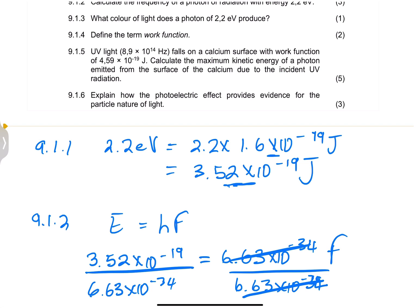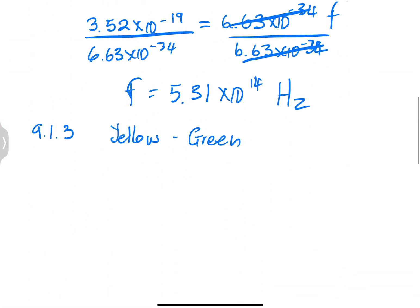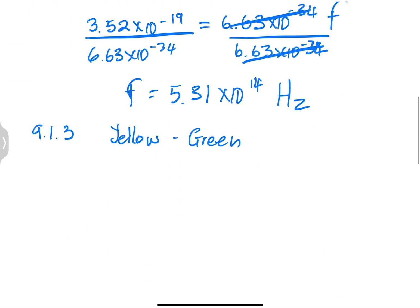They say UV light, which has a frequency of 8.9 times 10 to the power 14, falls on a calcium surface with the work function. So we've got the frequency of UV light, we've got the work function of calcium. They say calculate the maximum kinetic energy of a photon emitted from the surface of calcium due to the incident UV light. So that's 9.1.5.